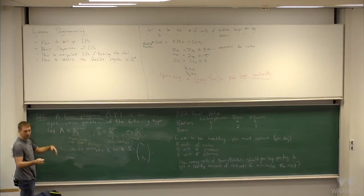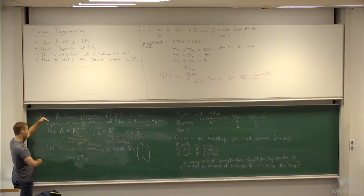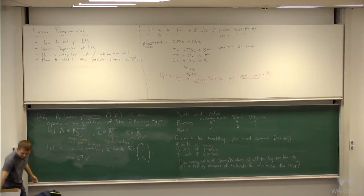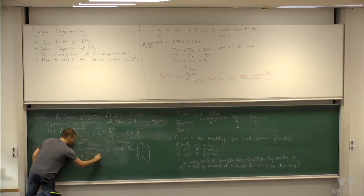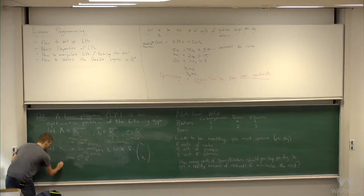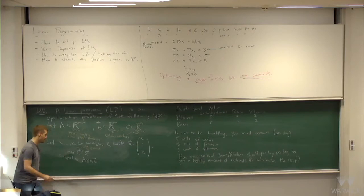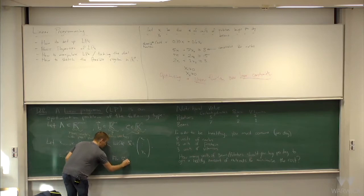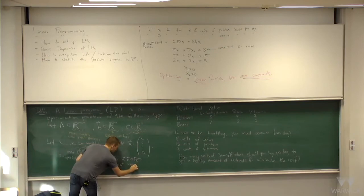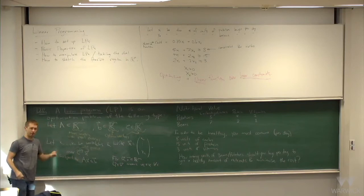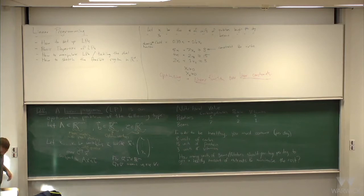The general form of a linear program is: maximize C^T X subject to AX ≤ B, where for vectors U and V, writing U ≤ V means every coordinate of U is at most the corresponding coordinate of V. You can replace max with min or switch the inequality direction. C^T X gives you a linear objective function — it's just a bunch of coefficients times variables added up. All linear programs basically look like this.